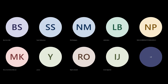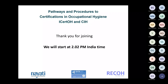CIH, that is Certified Industrial Hygienist, is a certification from the Board of Global EHS Credential in USA. Previously they were ABIH, that is American Board of Industrial Hygiene. So what are the ways to become certified in both the areas is what we are going to talk about.